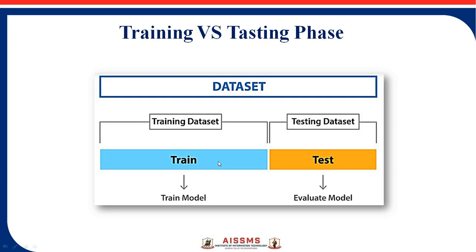In machine learning, the first and most important thing is dataset. Dataset means collections of information, different types of information. Machine learning has the task to divide the given dataset into the training and testing parts.